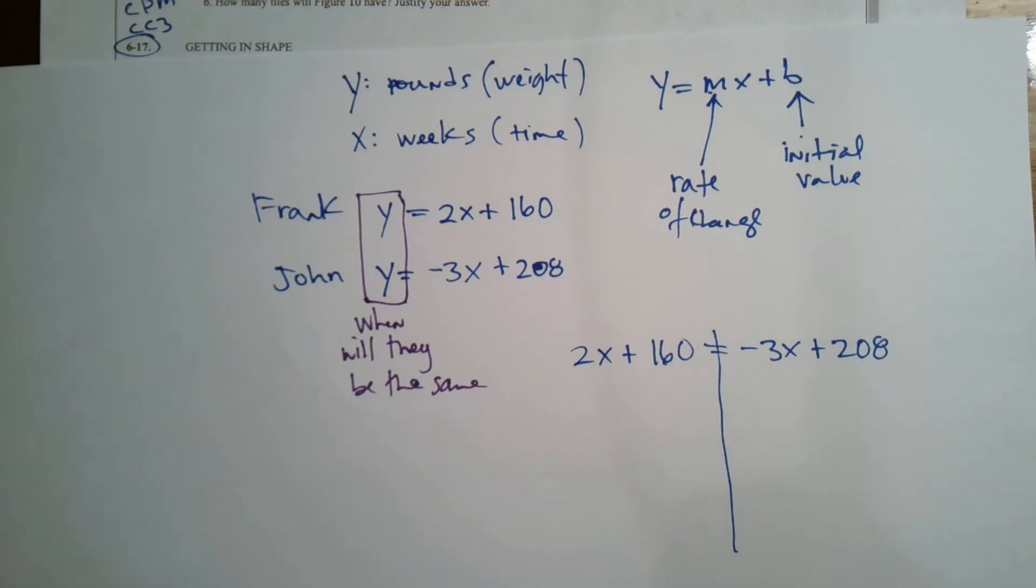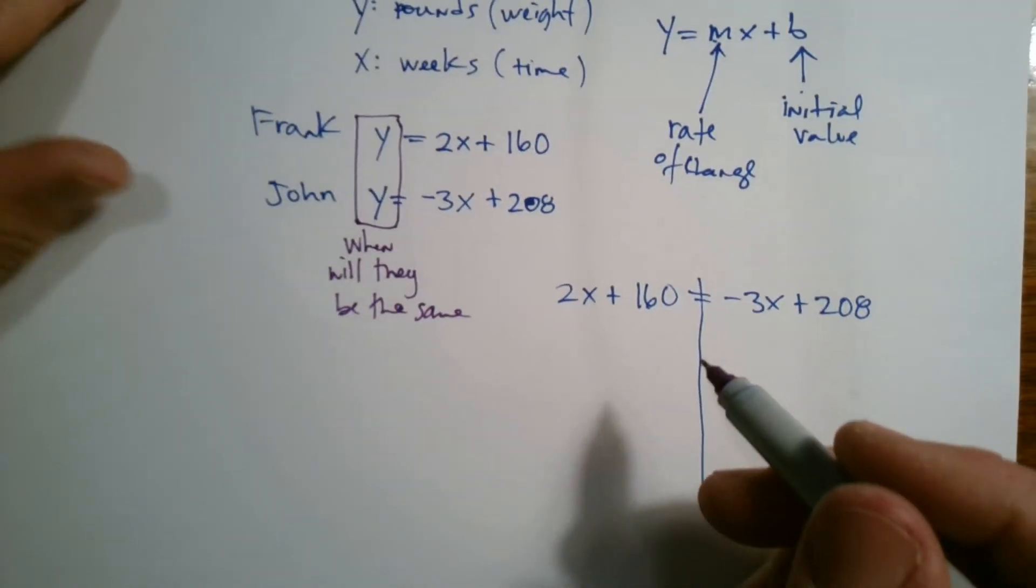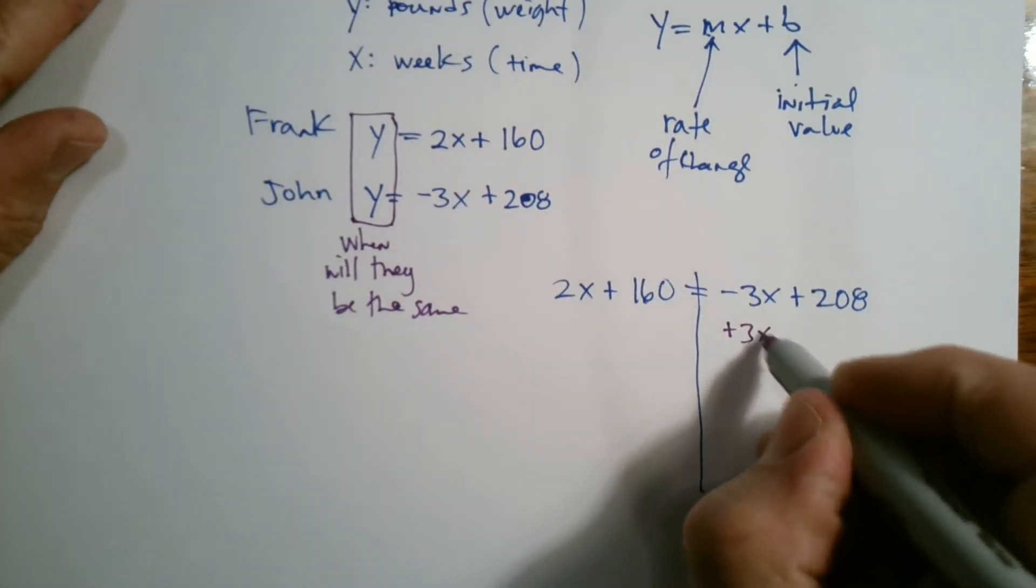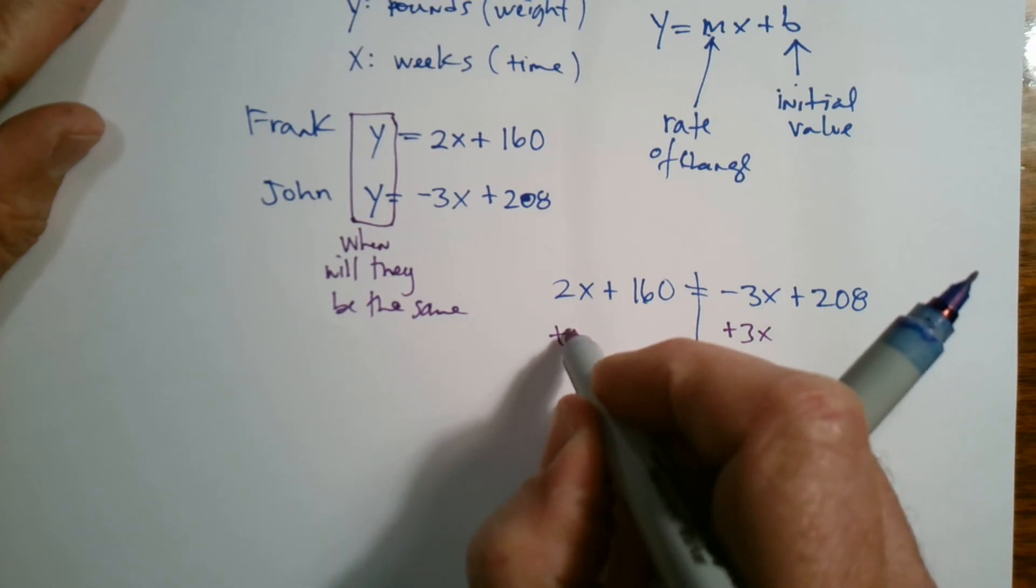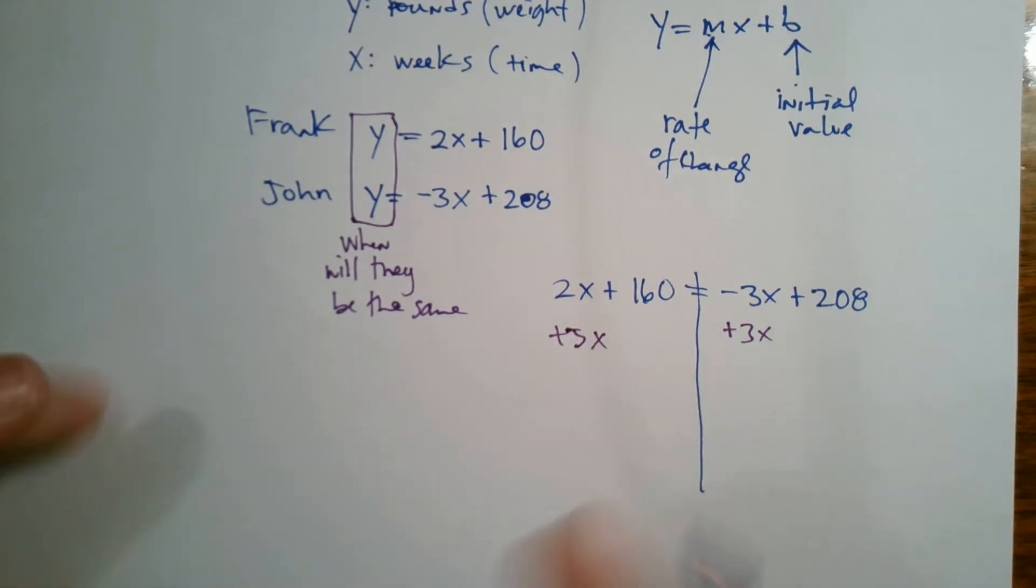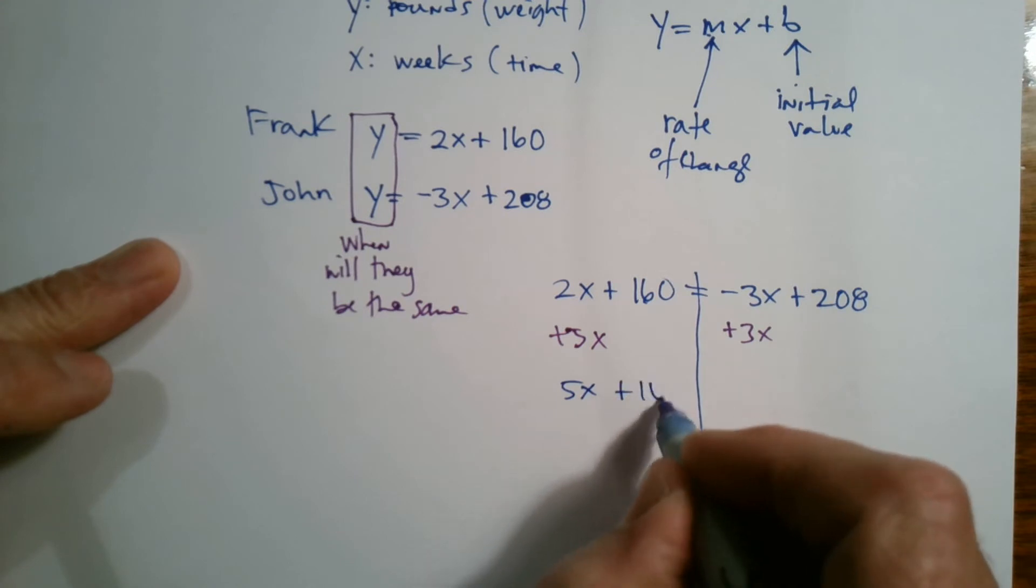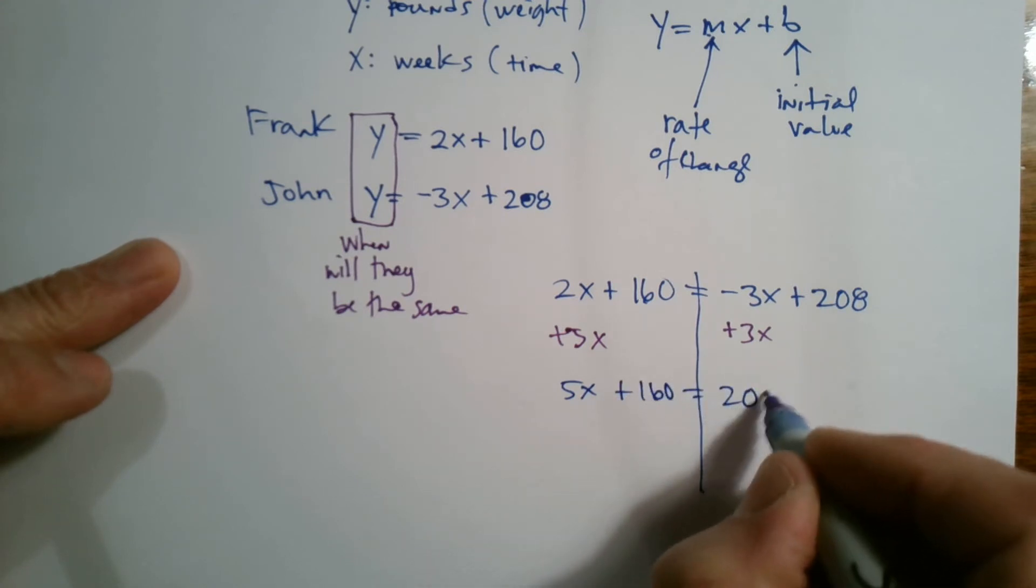How do we do that? We get our X isolated. So I'm going to add three X to both sides and I get 5X plus 160 equals 208.